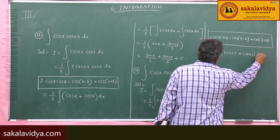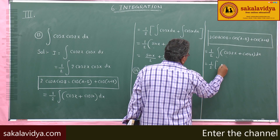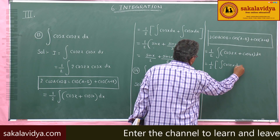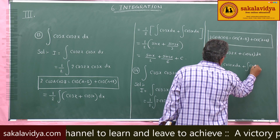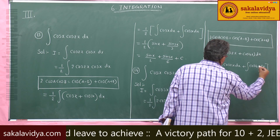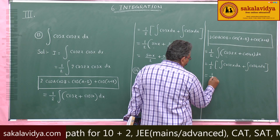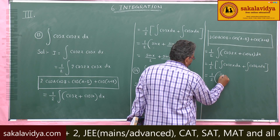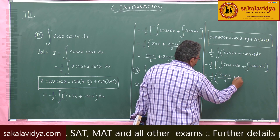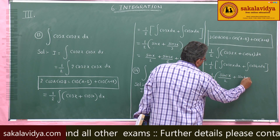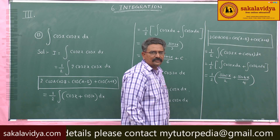Separating the integrals: 1/2 times integral of cos 2x dx plus integral of cos 4x dx. This gives sin 2x by 2 (since derivative of 2x is 2) and sin 4x by 4 (since derivative of 4x is 4). Multiply each term with 1/2.